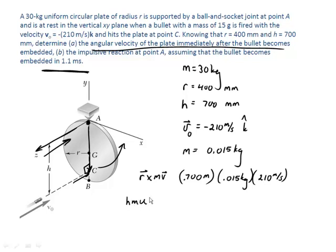And so the angular momentum of the system afterward is going to be HMU. That's going to be the angular momentum of the bullet. Plus I sub A. That's the rotational inertia of the plate about point A times omega. But omega will be the same as the velocity of the center of gravity of the plate divided by the radius of the plate.